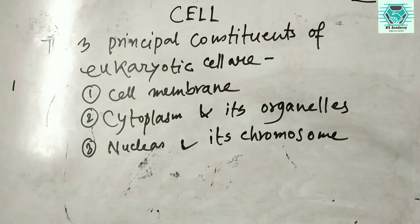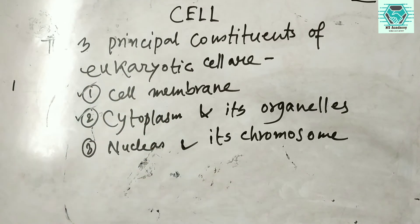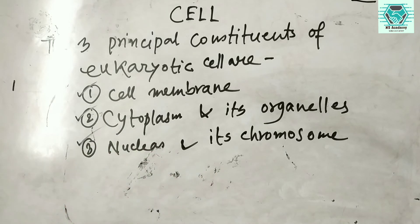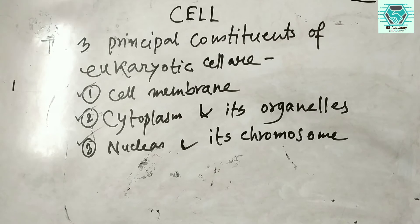The three principal constituents of a eukaryotic cell are: number one, cell membrane; number two, cytoplasm and its organelles; and number three, nucleus and its chromosomes. The cell membrane is a vital part of the cell because without the membrane there is no existence of the cell.